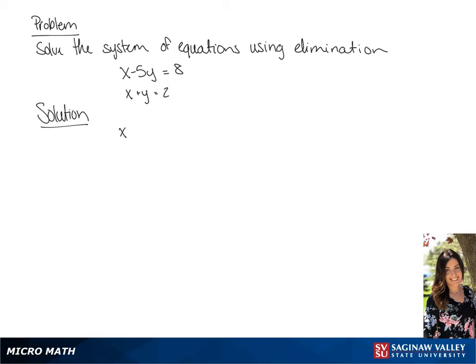We're going to solve the system of equations using elimination. We're going to start by multiplying the second equation by 5. So when we add them together, we get 6x equals 18. This will give us x equals 3.